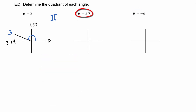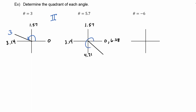For theta equals 5.7, we label our axes: 0, 1.57, 3.14, 4.71, 6.28. We can see that 5.7 lies in quadrant 4, because it falls between 4.71 and 6.28.